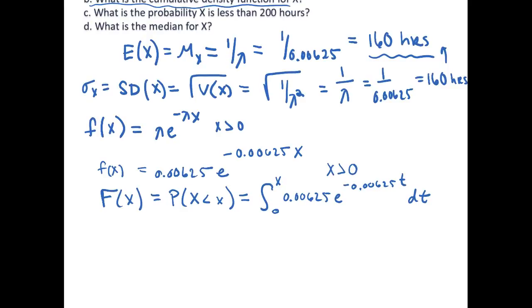And so then when I take my bounds of integration it will be a function of X. So if I integrate this I get negative e to the negative 0.00625 t from 0 to X. This will be equal to negative e to the negative 0.00625 X minus a negative e to the negative 0.00625 times 0. And so e to the 0 will just go to 1 and this will actually be adding a positive 1.